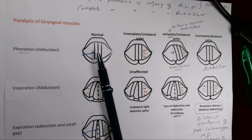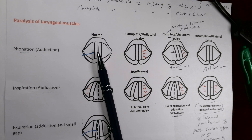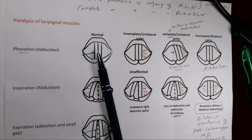Finally, laryngeal edema typically affects the upper part of the larynx because the mucosa is loosely attached there and fluid can accumulate. Below the vestibular fold, there is tight adhesion between the mucosa and the underlying layer, so edema is usually supraglottic — above the glottis. Thank you very much, and feel free to comment or email any questions.